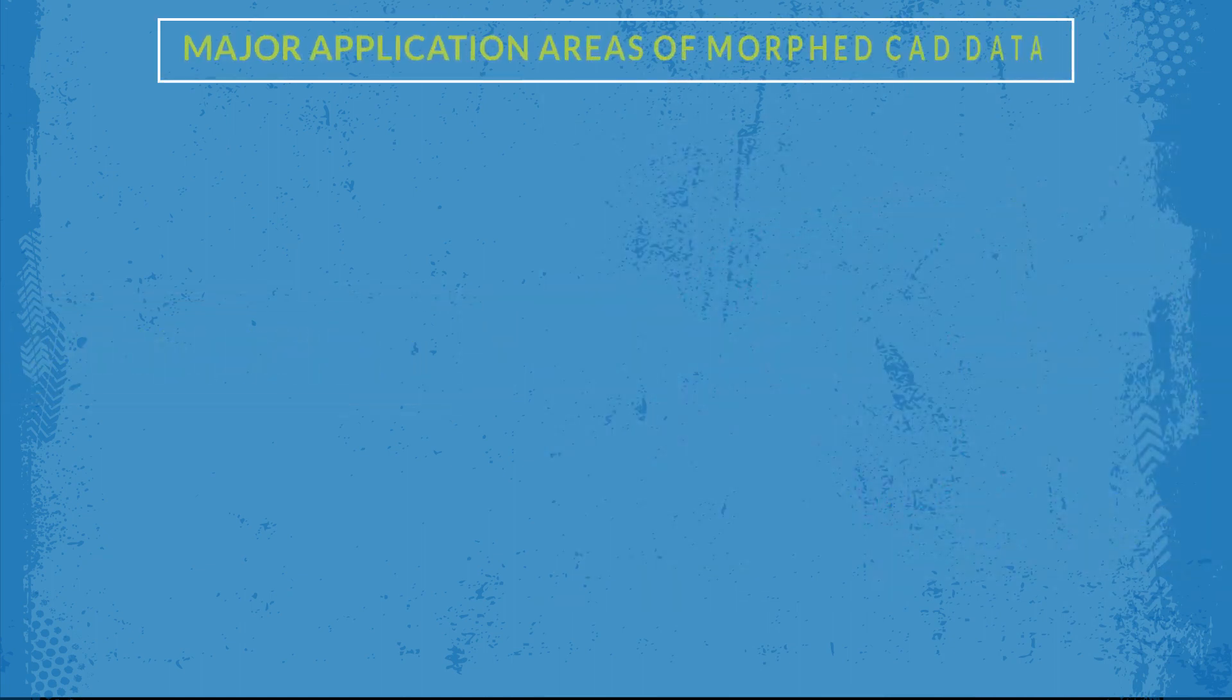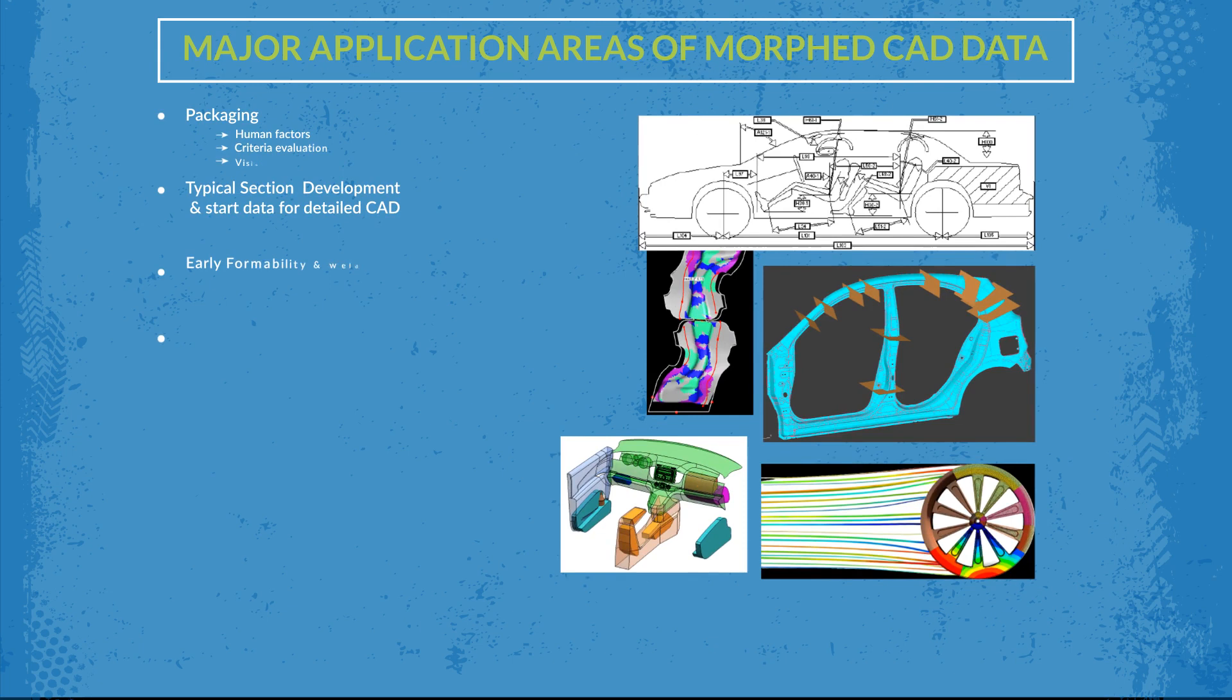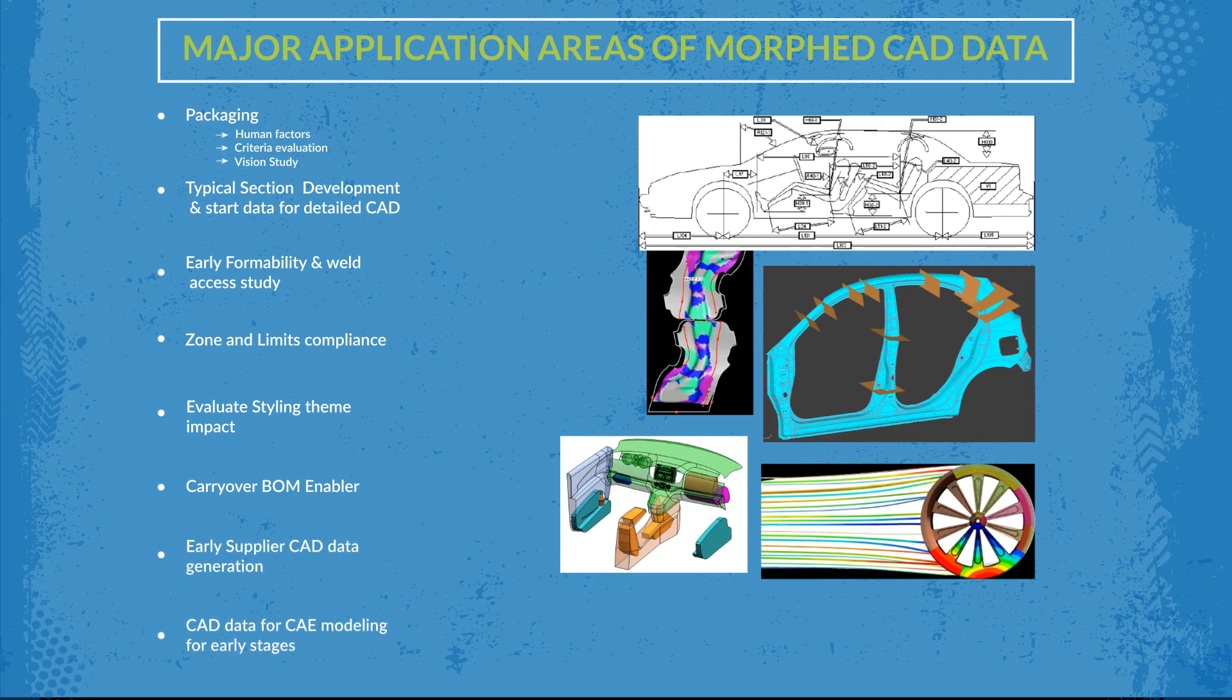The major application areas of these morphed CAD data are packaging, section development, zone and limits compliance, evaluate styling theme impact, CAD data for CAE modeling for early stages, etc.